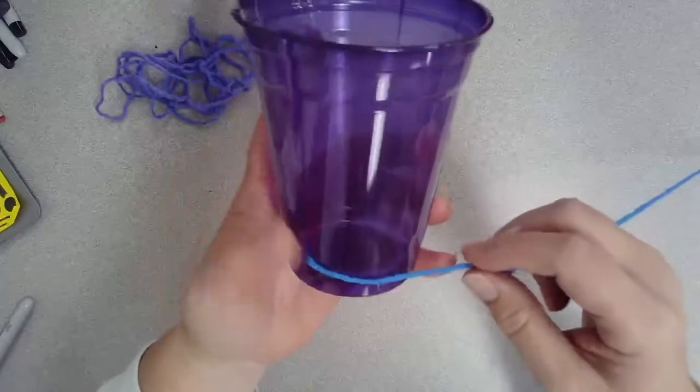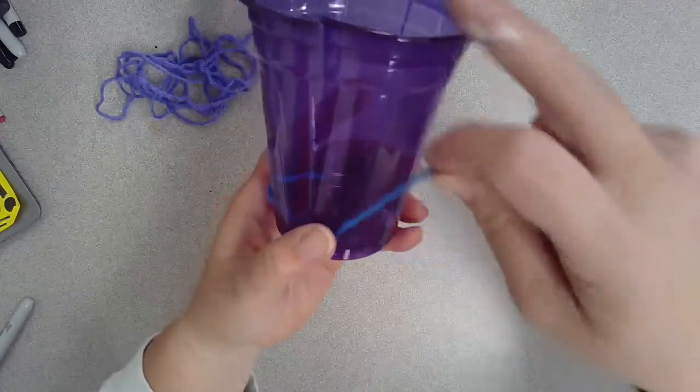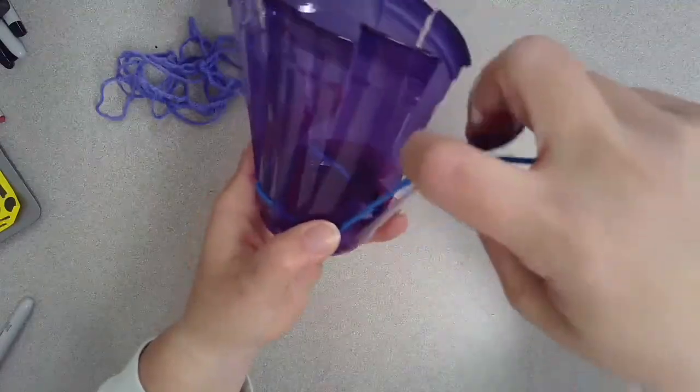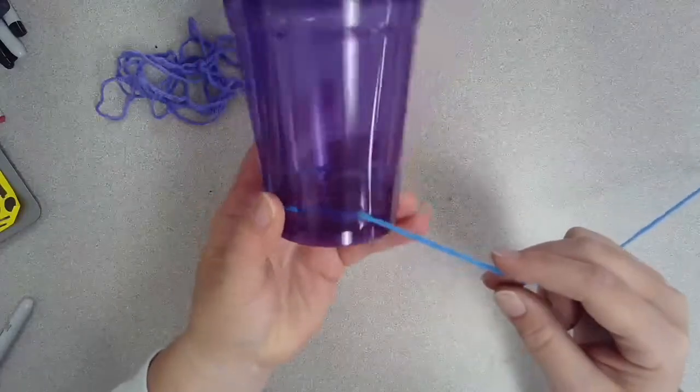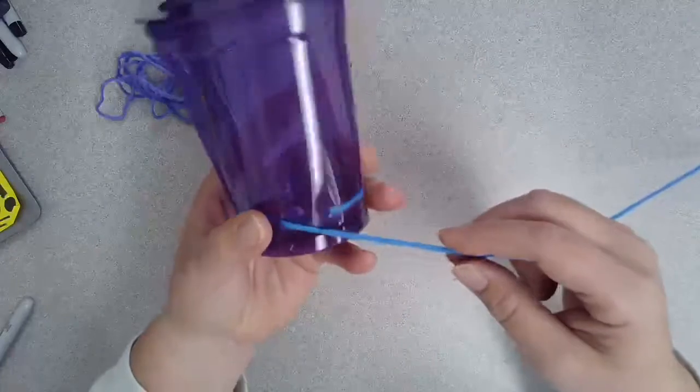Once you're done sticking it in, you're going to start weaving. Go around one, under one. Go around one, under one. Go around one, behind one. All the way around, pushing it down to the bottom of each slit as you weave.